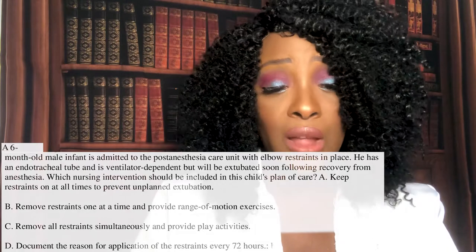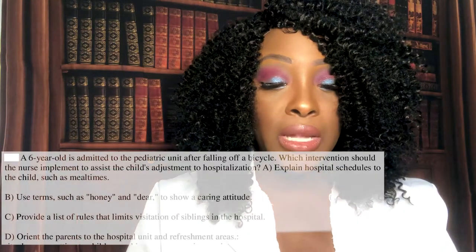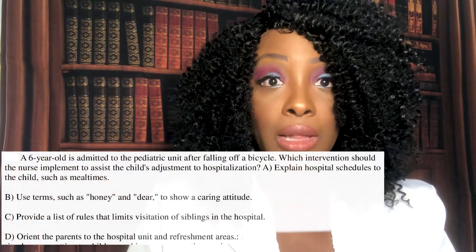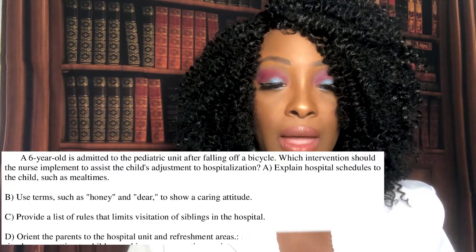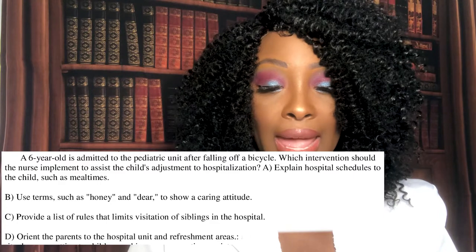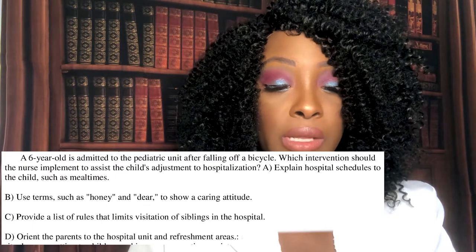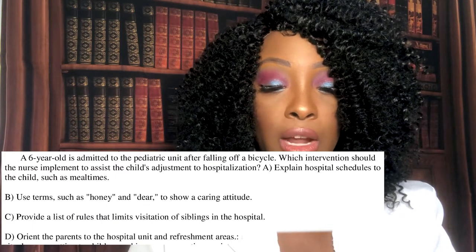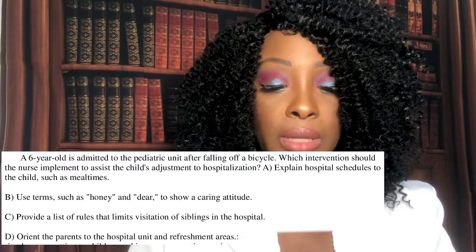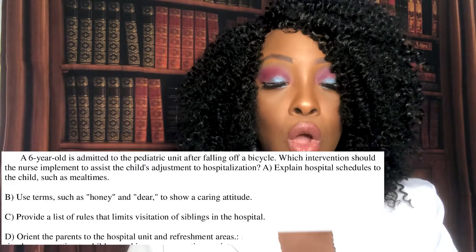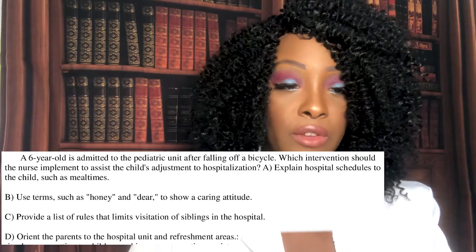You remove the restraints only one at a time, provide range of motion exercises, then put it back on. This is very important to prevent the patient from developing contractures. All other answer choices are flat out incorrect. Question nine: A six-year-old child is admitted to the peds unit after falling off a bike. Which intervention should the nurse implement to assist the child's adjustment to hospitalization? A) Explain hospital schedules to the child such as meal times. B) Use terms such as honey and dear to show a caring attitude. C) Provide a list of rules that limits visitation to siblings. Or D) Orient the parents to the hospital unit and refreshment areas.